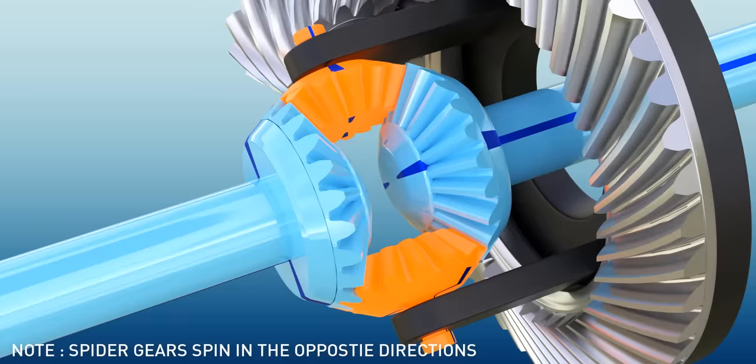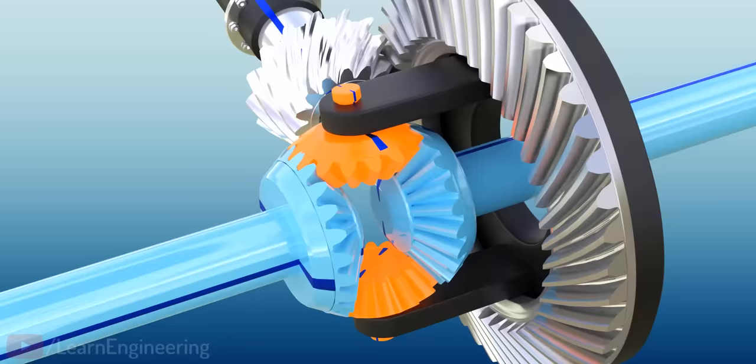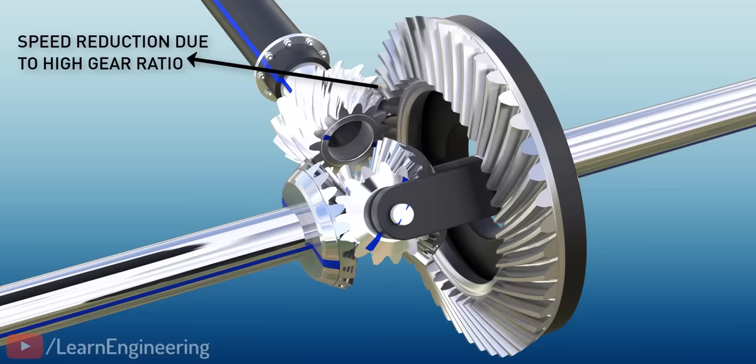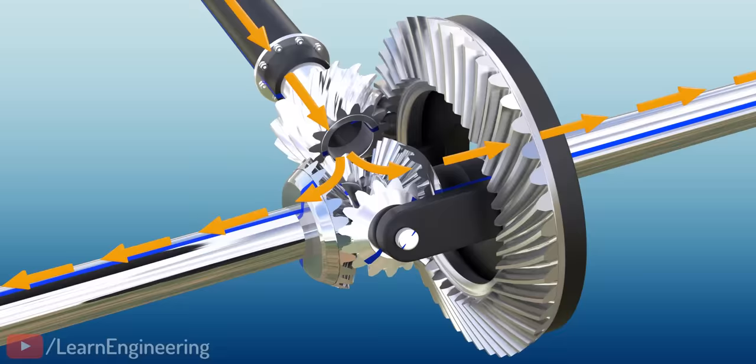Apart from allowing wheels to rotate at different RPMs, the differential has two more functions. The first is speed reduction at the pinion ring gear assembly, which will result in torque multiplication. The other function is to turn the power flow direction by 90 degrees.